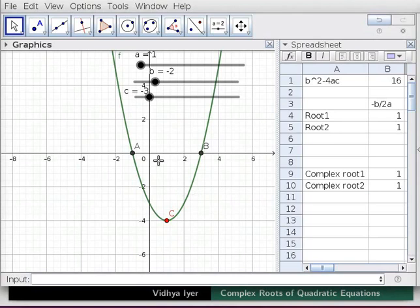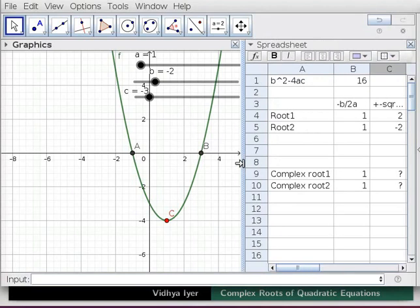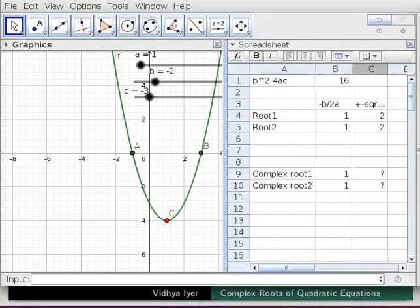Note how the parabola changes to the one seen for fx = x² - 2x - 3. The real routes plotted earlier for fx = x² - 2x - 3 appear now. Drag boundary to see spreadsheet view. As roots are real, calculations for complex roots become invalid.